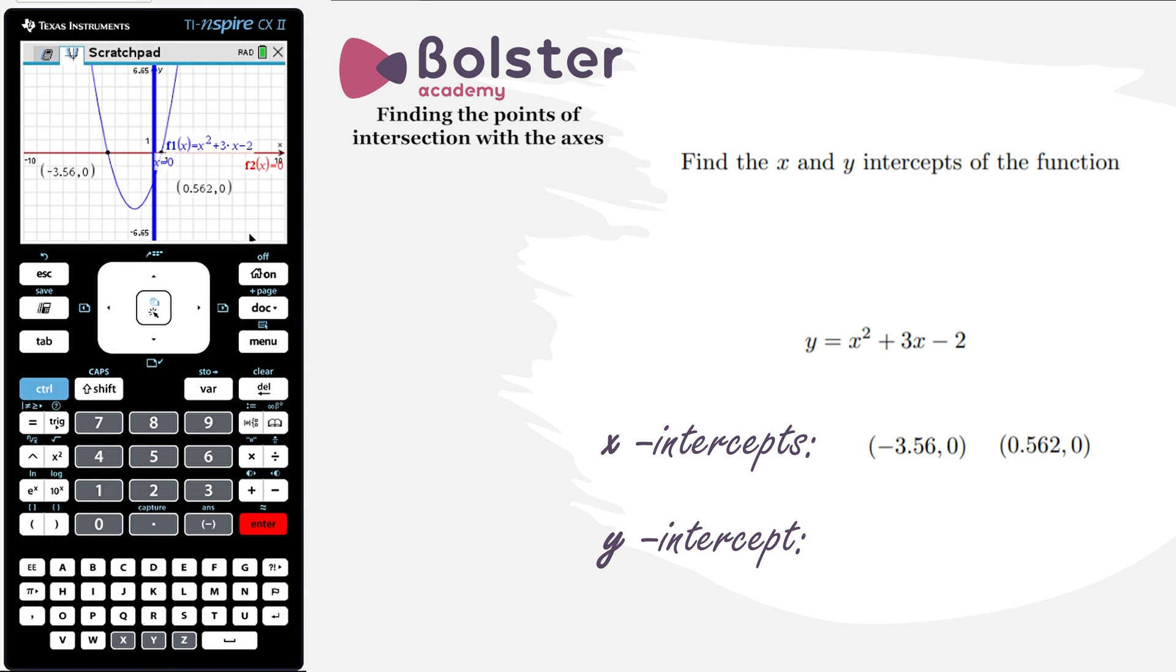I can see it's gone in there in blue, and now I just find the intersection point between this and my original function. So again menu, analyze graph, intersection point. Now the calculator is asking which two functions do you want to find the intersections between. So we actually have to choose the functions. I'm going to choose my original graph and the y-axis. Now what it wants us to do is plot a box within which you want to find this intersection. So I do my box more or less covering the intersection point that I'm interested in. I get my y-intercept at 0, negative 2.